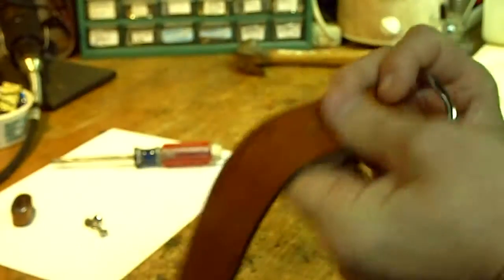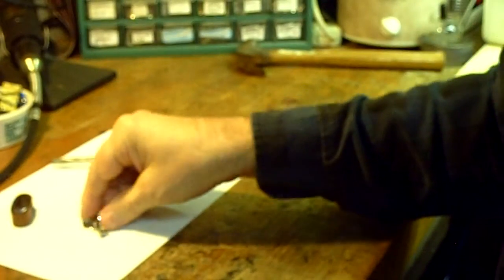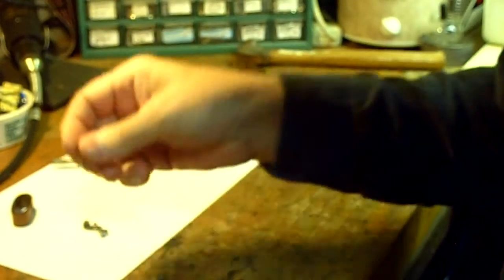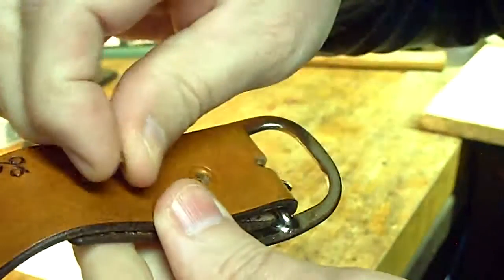And lay that down here. And then we'll put the screws in. Now, the screws are, let me see here. Okay. Here we go. See the type of little thing I have here? That's the top part of the Chicago screw.